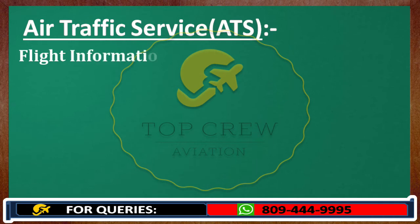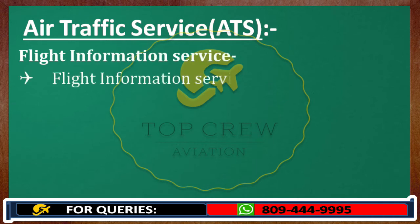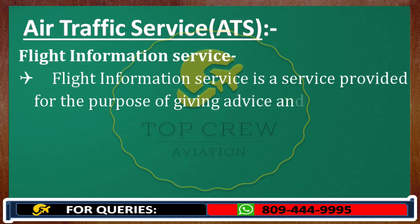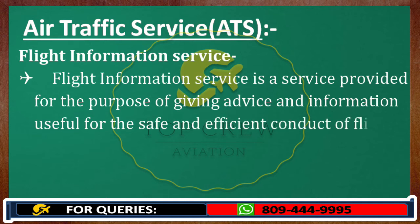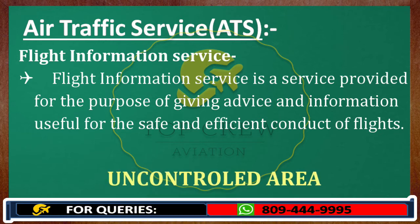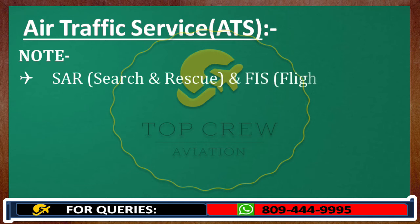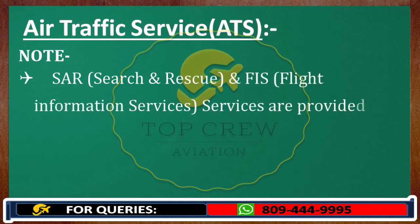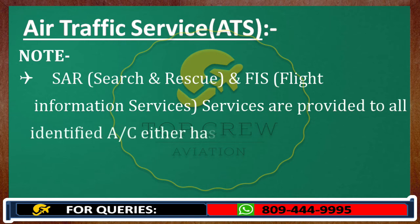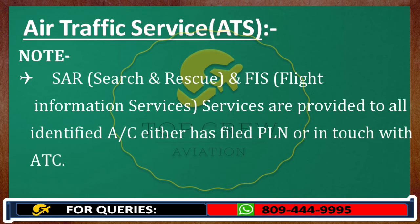Now let's talk about flight information service. FIS is a service provided for the purpose of giving advice and information useful for the safe and efficient conduct of flights. Flight information service is provided in uncontrolled areas. Note: SAR — search and rescue — comes under alerting service, and FIS is provided to all identified aircraft that have either filed a flight plan or are in touch with ATC.